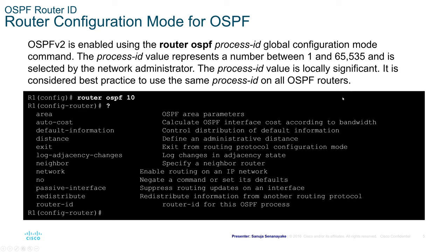If you are creating an OSPF Version 2 configuration and you use router OSPF 10 on part of your network, use the same process ID for other routers within that OSPF region. That is considered best practice. For your exams and quizzes, I recommend remembering that the maximum number of process IDs is 65,535, just in case Cisco asks such a question. If you are at an academic institution, an instructor may ask you verbal questions about the process ID maximum value during a lab exam.